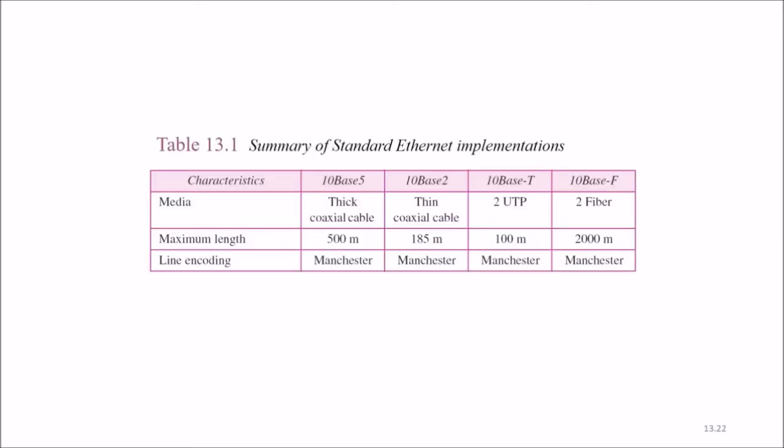To summarize what we have just seen about the wires of the Ethernet: Summary of standard Ethernet implementation. The media is 10Base5, that means this is 10 Mbps baseband 500 meter, thick coaxial cable. All are having Manchester line encoding. 10Base2 means 10 Mbps, 185 meter, thin coaxial cable. 10BaseT means 100 meter, 2 UTP, unshielded twisted pair. 10BaseF means 2000 meters because it is fiber, baseband signal, two fibers are there.